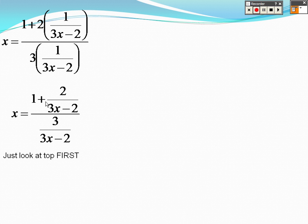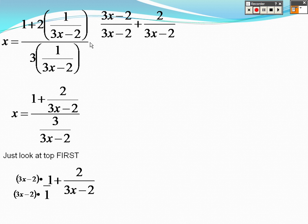To do that, I put that over 1, and I'm going to find a common denominator of 3x minus 2. So it's 3x minus 2 over 3x minus 2, plus 2 over 3x minus 2. What I realize is the bottom is the same, but the negative 2 and plus 2 cancel. So I have this.